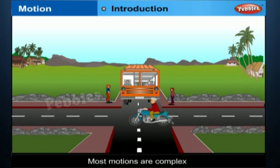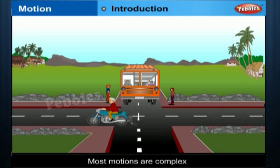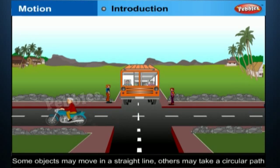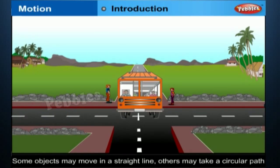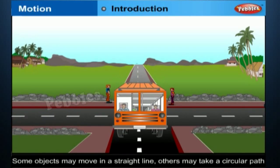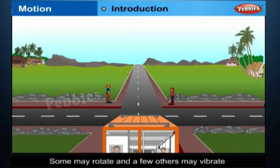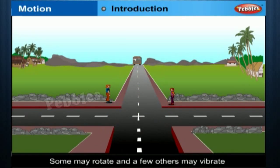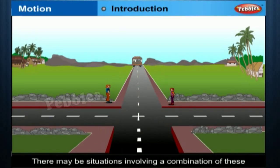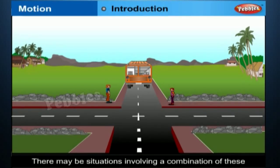Most motions are complex. Some objects may move in a straight line, others may take a circular path. Some may rotate and a few others may vibrate. There may be situations involving a combination of these.